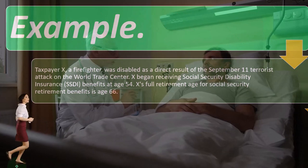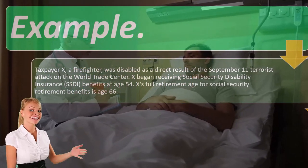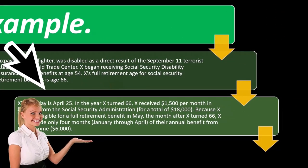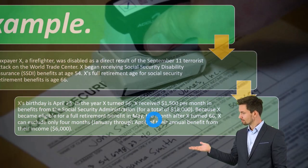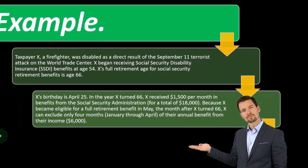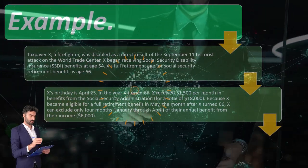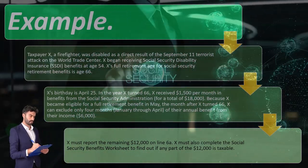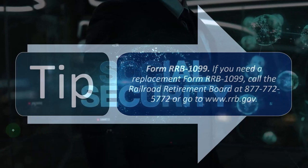Example: Taxpayer X, a firefighter, was disabled as a direct result of the September 11th terrorist attack on the World Trade Center. X began receiving SSDI benefits at age 54. X's full retirement age is 66, with a birthday of April 25th. In the year X turned 66, X received $1,500 per month in benefits from the SSA for a total of $18,000. Because X became eligible for full retirement benefits in May — the month after turning 66 — X can exclude only four months (January through April) of annual benefits from income: $6,000. X must report the remaining $12,000 on line 6a.